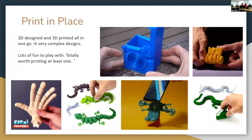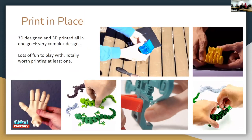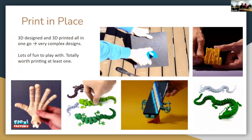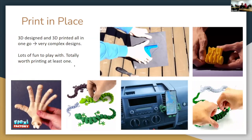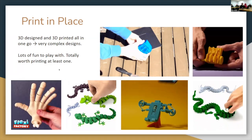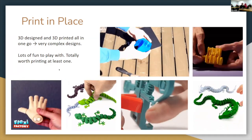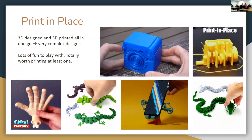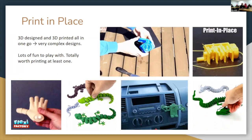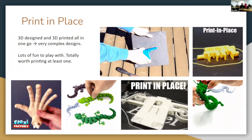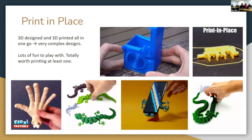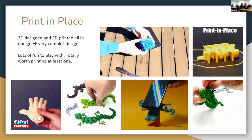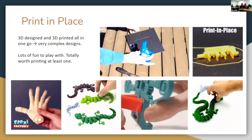Print-in-place is always a fun advanced feature. There are tons of options to download — I particularly like this articulated hand; it's just on the border of creepy. There's a little phone holder with a snap, a dragon that uses scales to hide the hinges, and if you want to explain to middle schoolers what a crankshaft looks like, there's a frog that prints in place.